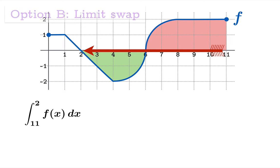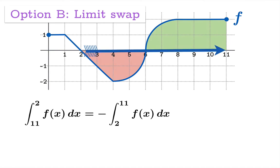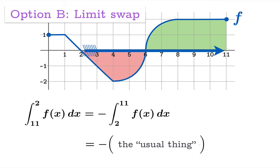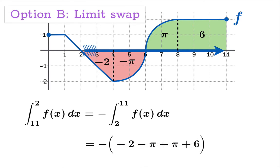So I would prefer to use option B, which is a direct application of the limit swap law. Right off the bat, we'll notice that the integral from 11 to 2 should be the opposite of the integral from 2 to 11. The advantage is that the minus sign has been factored out and what's left is the usual calculation — no new rules to work through going backwards. You just do what you usually do and then throw a minus sign in front. Areas below count negatively, areas above count positively, and this calculation yields the same result.